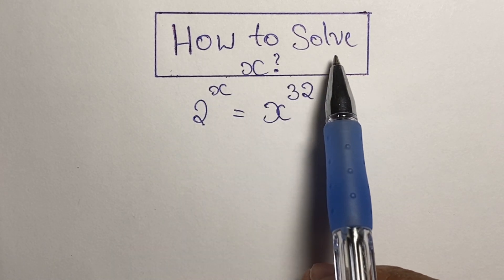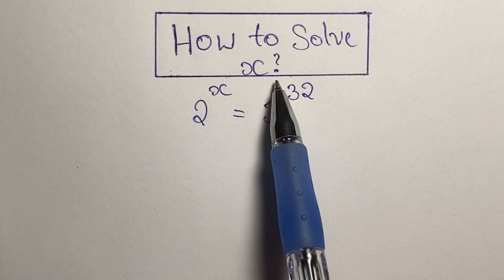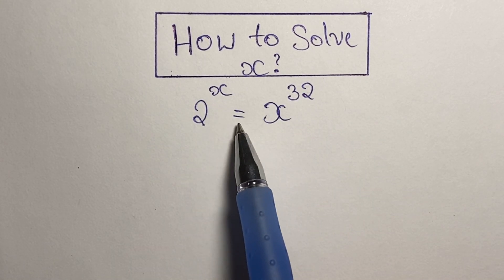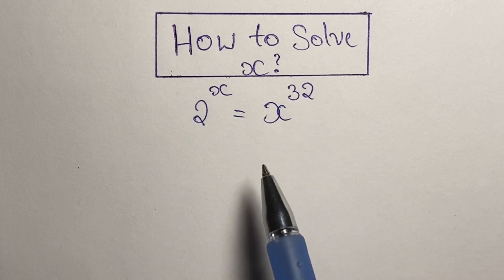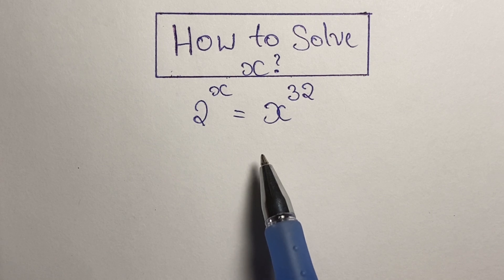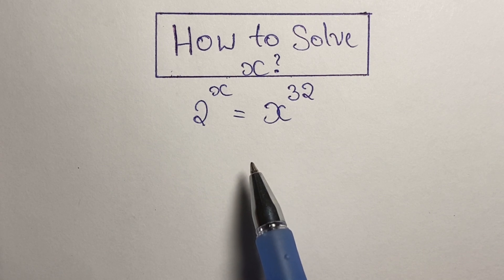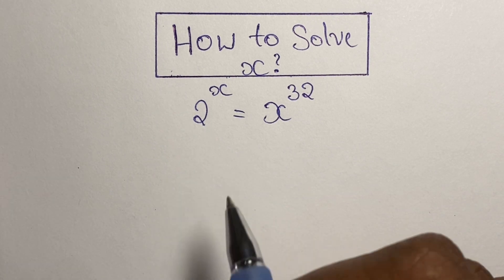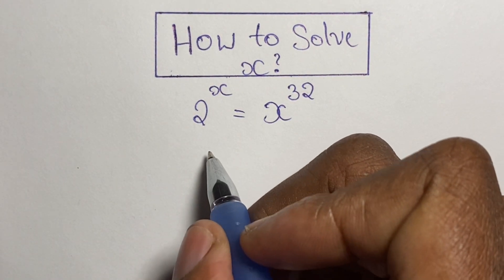Greetings again everyone, welcome back to my channel. Here we have another algebraic exponential equation that we're going to solve. We have 2 to the power of x is equal to x to the power of 32, and we're given to find the value of x.